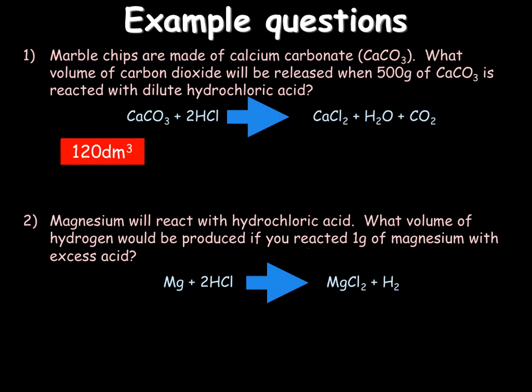For question 1 the answer is 120 dm cubed. The MR of calcium carbonate is 100 and carbon dioxide is 44. When we divide both of them by 100 we end up with 1 for CaCO3 and 0.44 for carbon dioxide. Timesing them both by our known mass of 500 we end up with our 500 grams of calcium carbonate and 220 grams of carbon dioxide. Working out our volume by doing mass over MR times 24, we do 220 divided by 44 and then timesing that by 24 to give us our answer of 120 dm cubed.